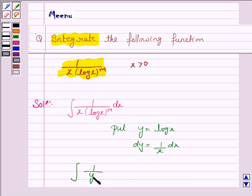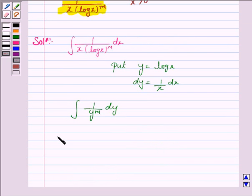the integral becomes 1 upon y to the power m dy, and again this integral becomes y to the power minus m dy.